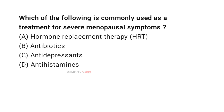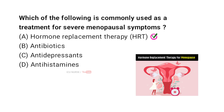Which of the following is commonly used as a treatment for severe menopausal symptoms? A. Hormone replacement therapy (HRT). B. Antibiotics. C. Antidepressants. D. Antihistamines. And the correct answer is A. Hormone replacement therapy (HRT). HRT is often prescribed to alleviate severe menopausal symptoms by replacing the estrogen and progesterone that the body no longer produces.